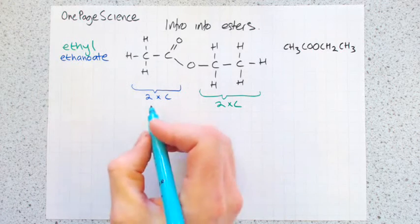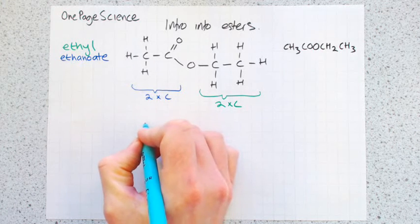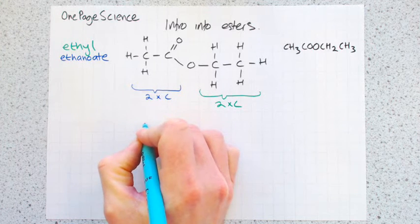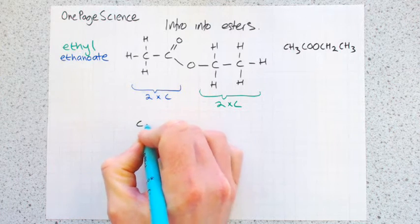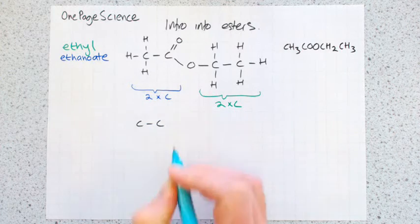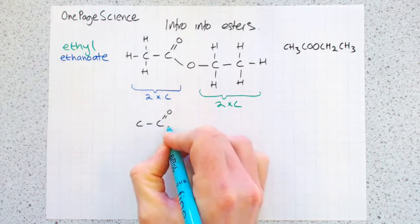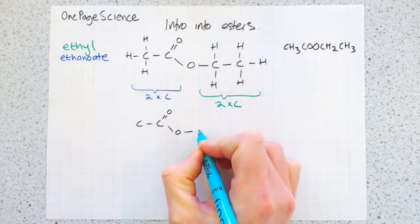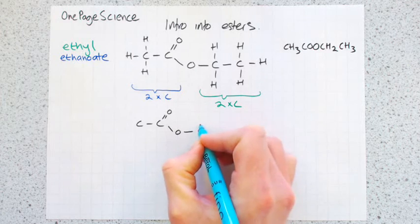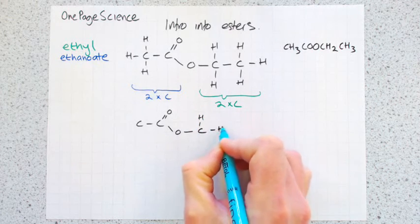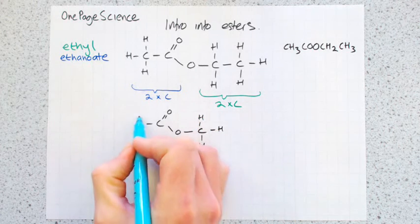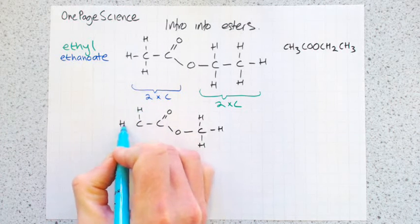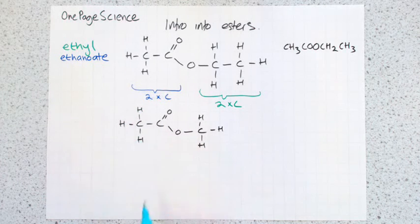I'll just give you a couple of other examples. So this time we're going to have still two carbons on this side. Double bond to an oxygen. Single bond to another oxygen. And this time, instead of having two carbons, we're just going to have one. And we're going to go around and fill in all the hydrogens.